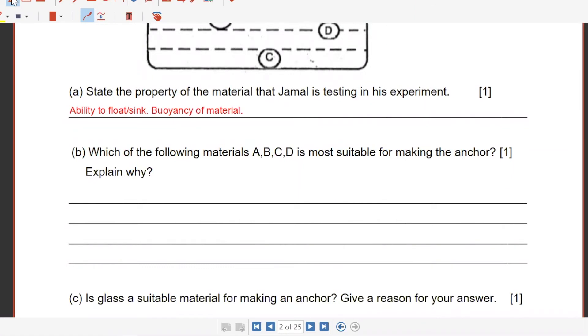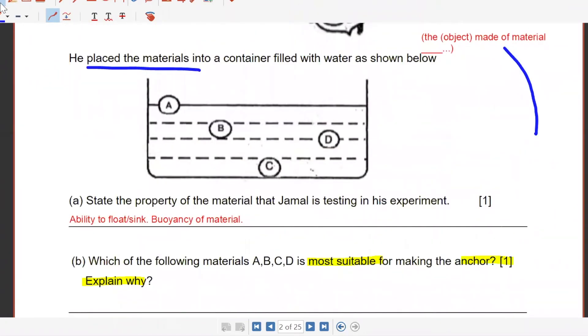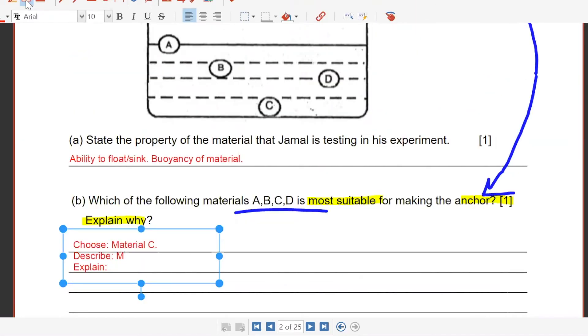Which material A, B, C, D is most suitable for making the anchor? We have to use the phrase right here. The object made of material, this is the phrase for material questions. Material C. What's the difference between material C and material B and material D and material A? Tell me the difference based on what you can see from the diagram. Material C sank the deepest. You can see that, into the water.